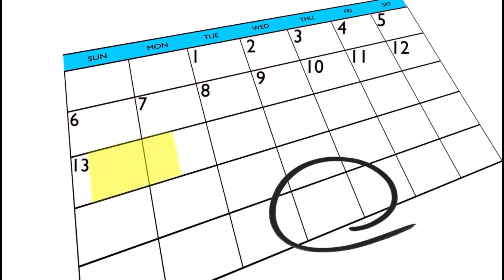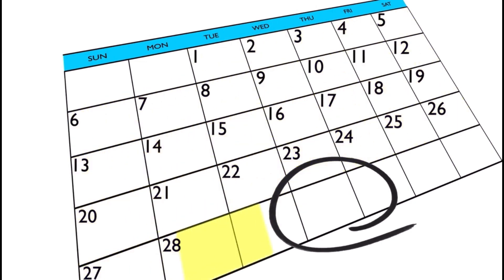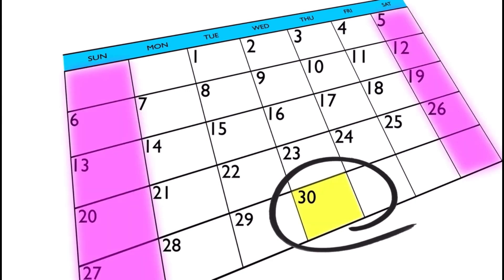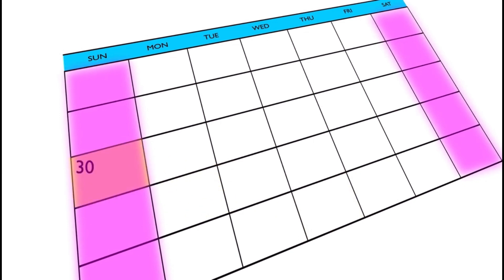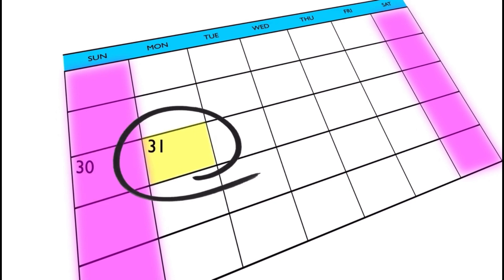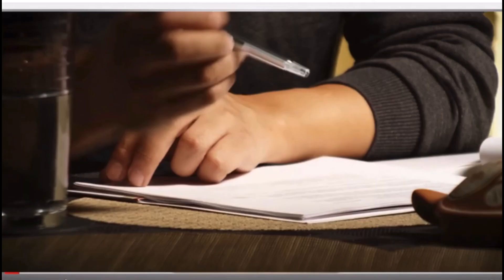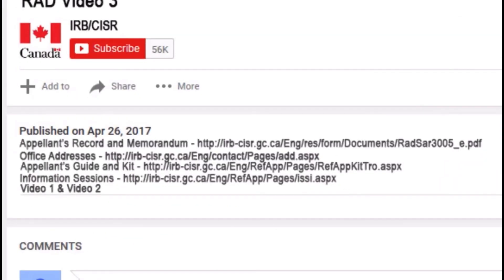Time limits. You should mail this package no more than 30 days after the day on which you receive the written reasons for the RPD decision. This is 30 calendar days, so it includes weekends and holidays. However, if the time limit ends on a weekend or a holiday, you may mail or deliver your Appellant's Record to the RAD on the next working day.